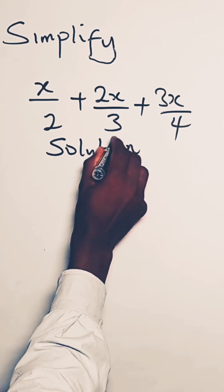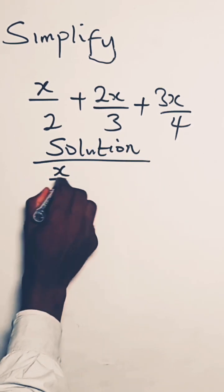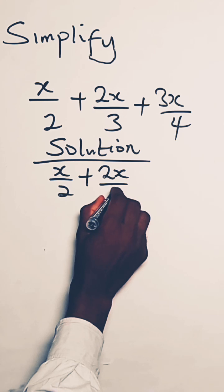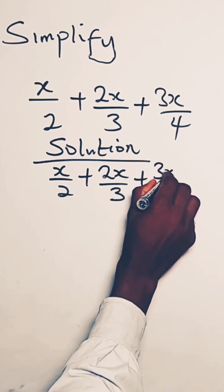Solution. x over 2 plus 2x over 3 plus 3x over 4.